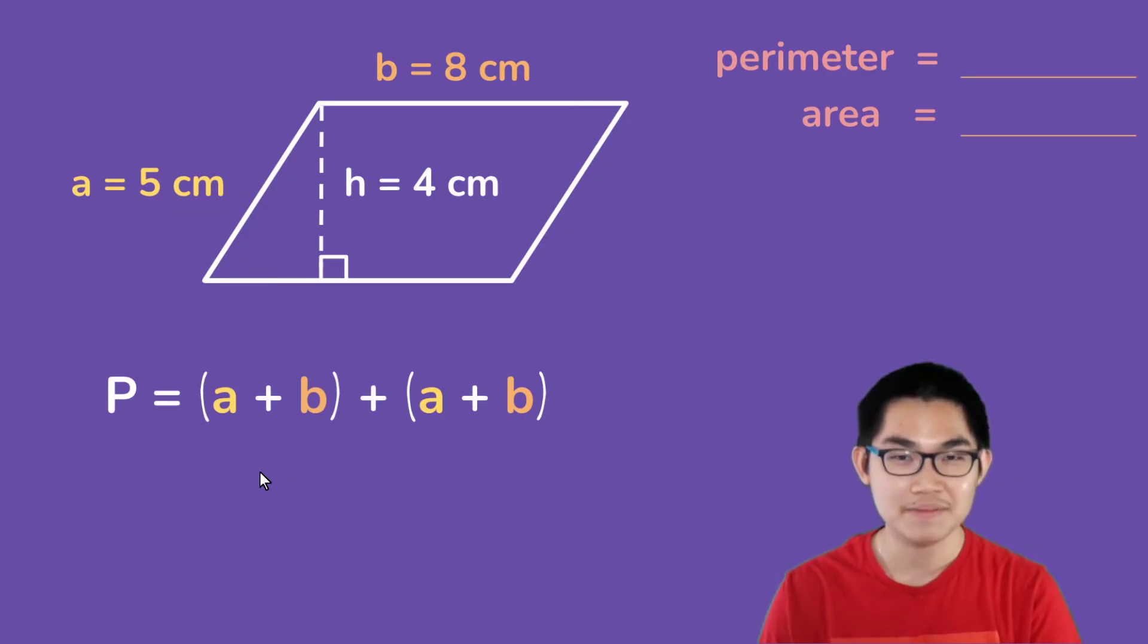For finding the perimeter, now sometimes you might see the perimeter written as 2 times (a + b) and these two mean the same thing. We know that a is 5 centimeters, b is 8 centimeters.